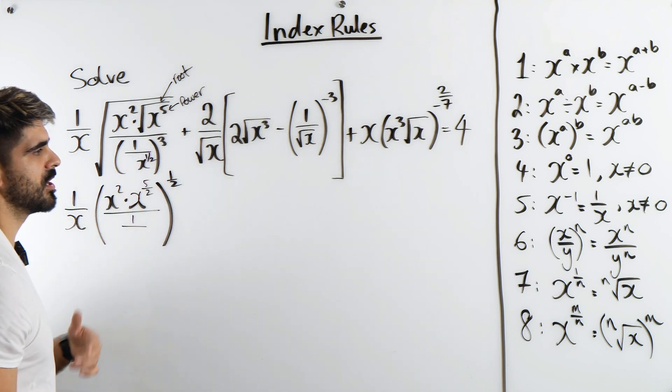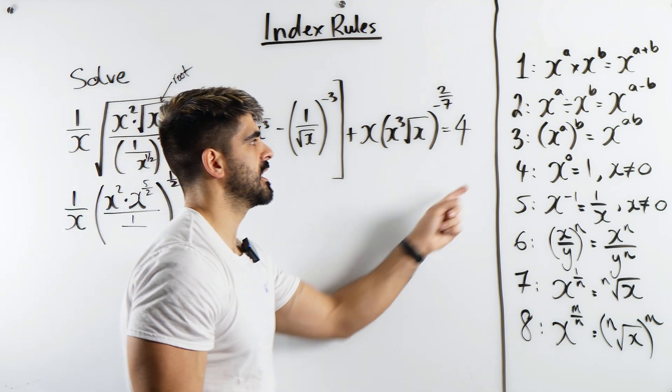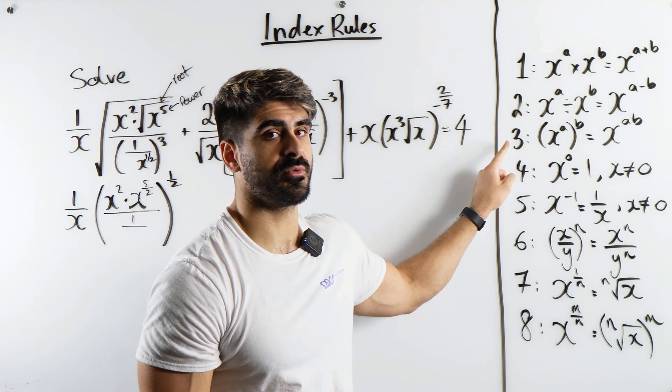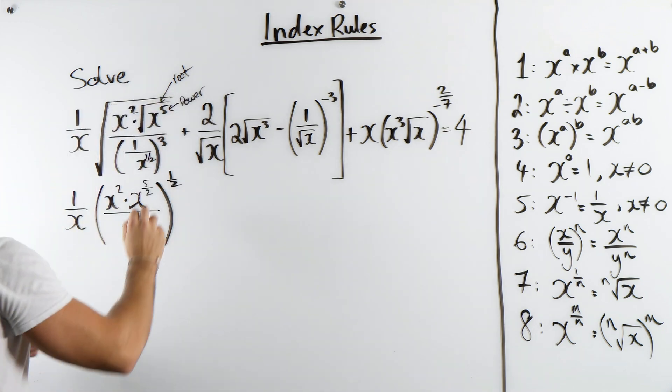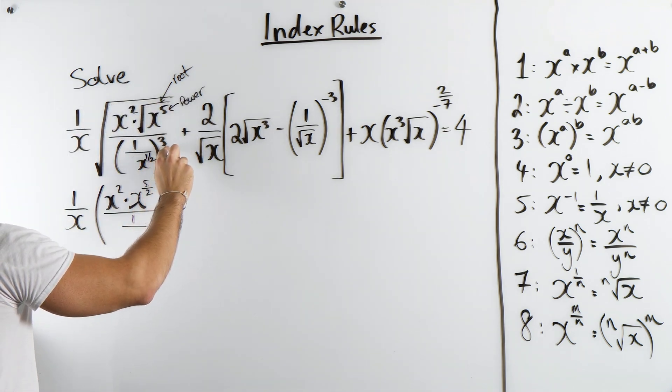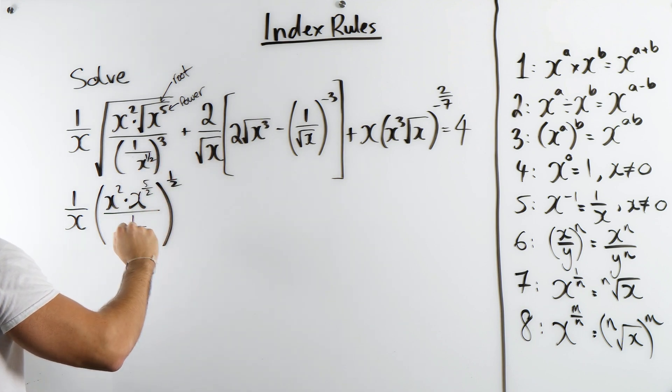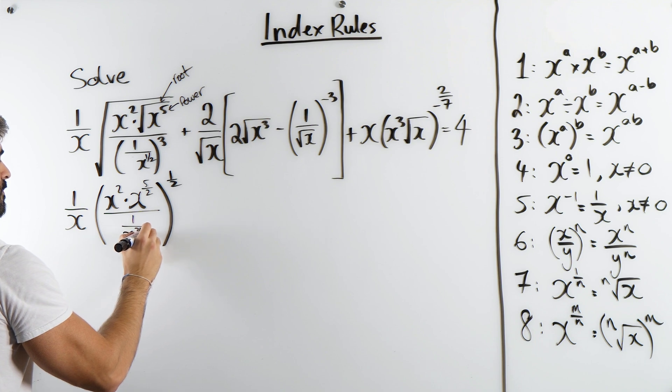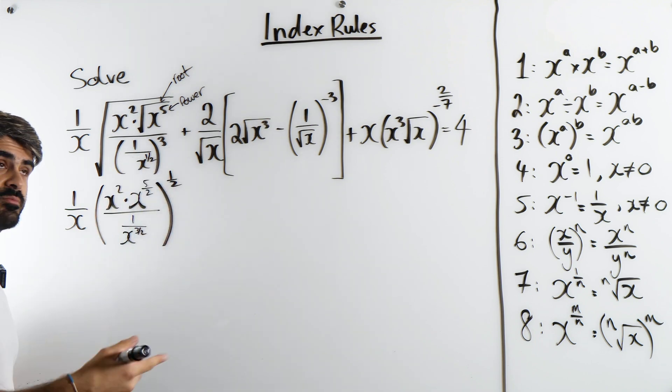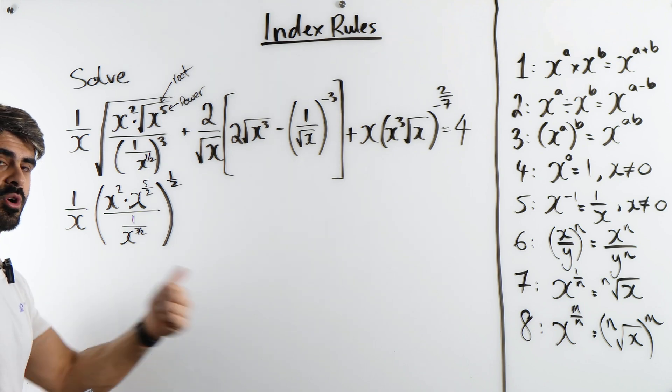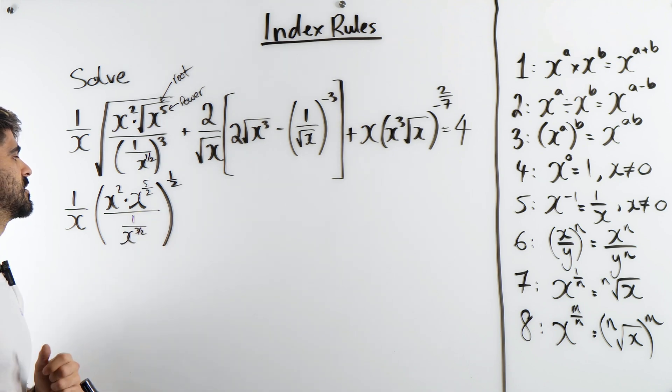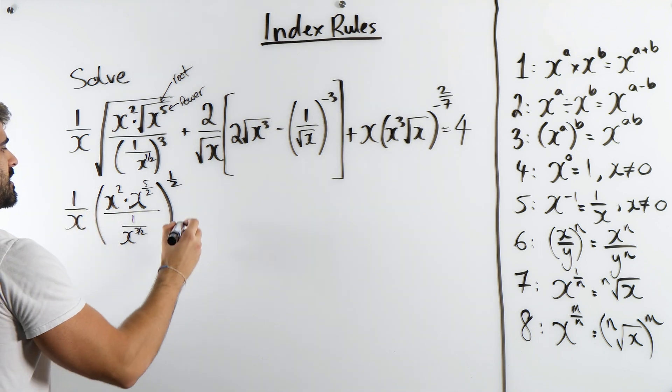Now x to the power of a half cubed, when we described this in the last video, is just an application of rule 3. You have x to a power raised to another power. You're multiplying those powers, that would be x to the power of 3 over 2. A half, when you times it by 3, you multiply the numerators, or a half plus a half plus a half is 3 over 2. We'll come back to this in a second.